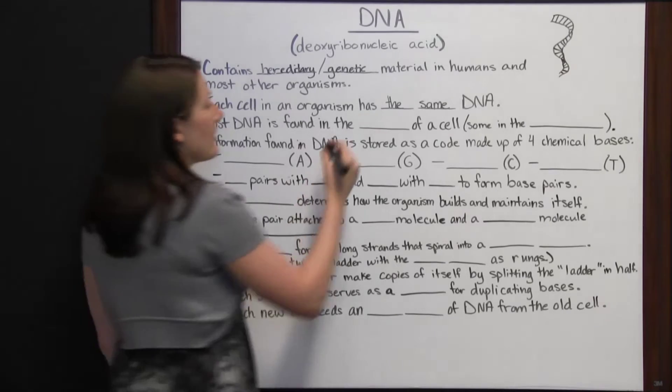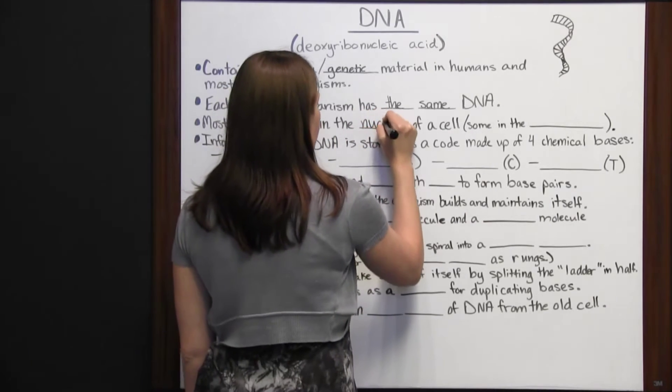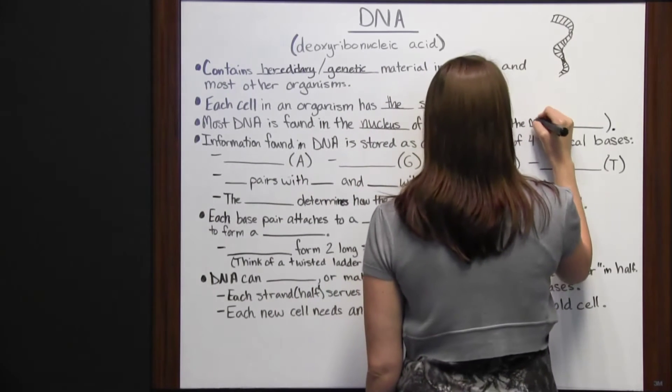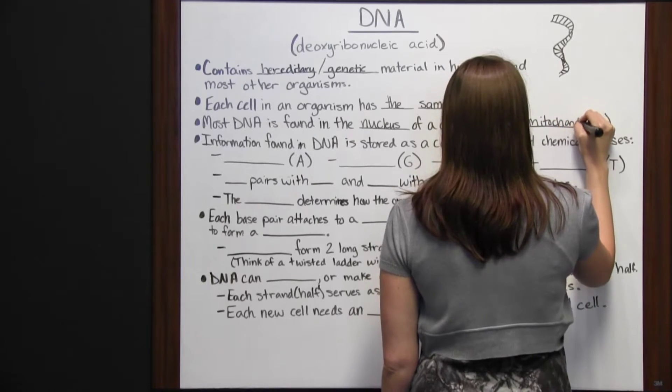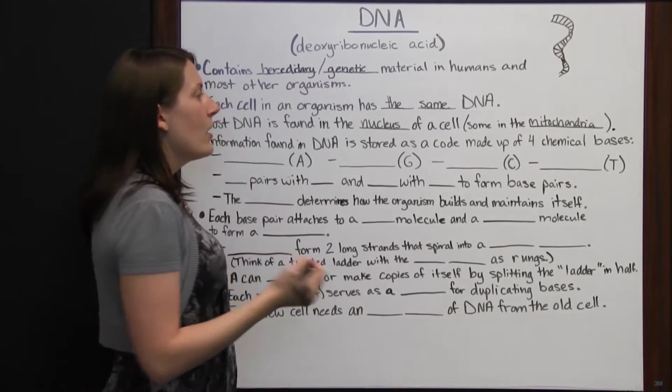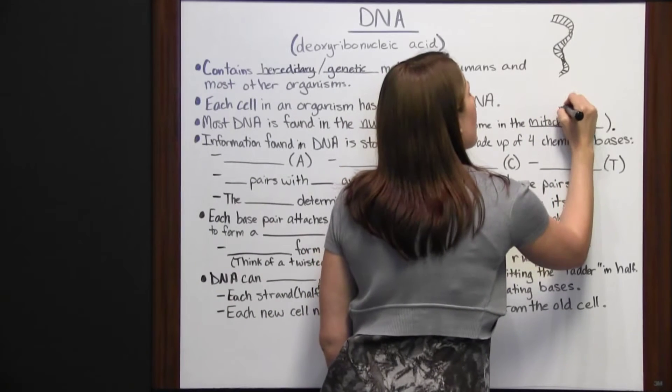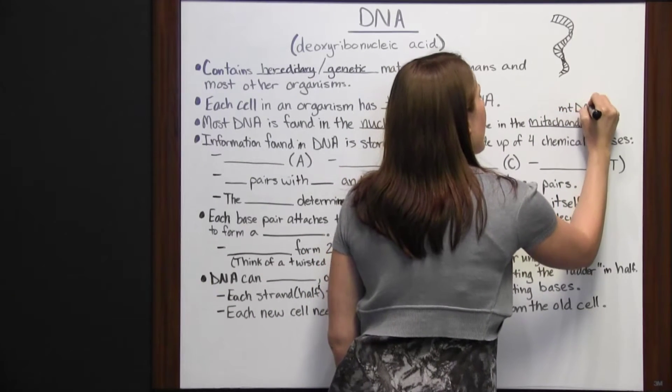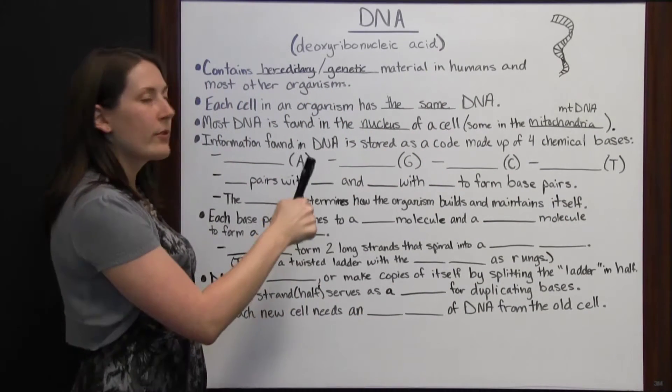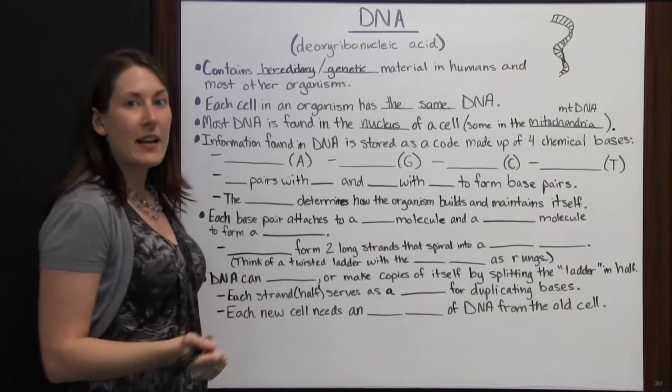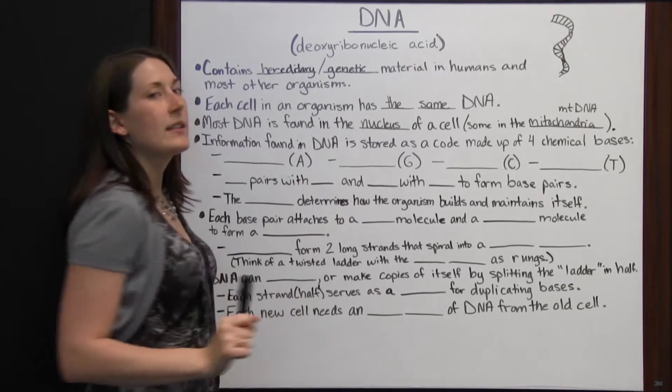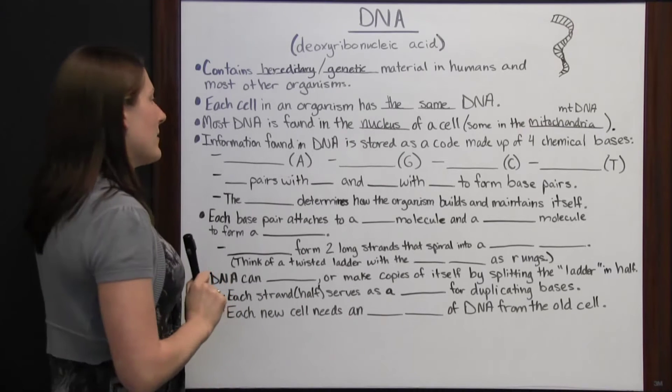Most DNA is found in the nucleus of a cell. There is some DNA in the mitochondria and then it is known as mitochondrial DNA or it would look like this if you saw an abbreviation for it. If you see the little mt before DNA in the abbreviation, that's because it's mitochondrial DNA and it's found in the mitochondria instead of the nucleus, but most DNA is going to be in the nucleus.